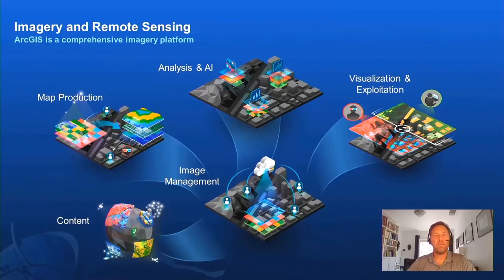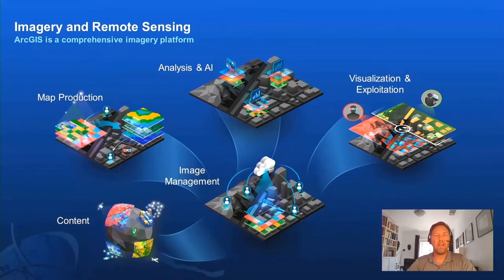The five key capabilities are: Content — the massive volumes of imagery you may have collected or want to access from ArcGIS Online or the Living Atlas; Image management — how to manage imagery and make it accessible to many applications; Map production from imagery — generating products such as orthophotos, elevation models, and 3D mesh; Imagery analysis — extraction of information including deep learning; and Visualization and exploitation — creating interactive user interfaces enabling users to visualize and analyze imagery across desktop, web, and mobile applications.